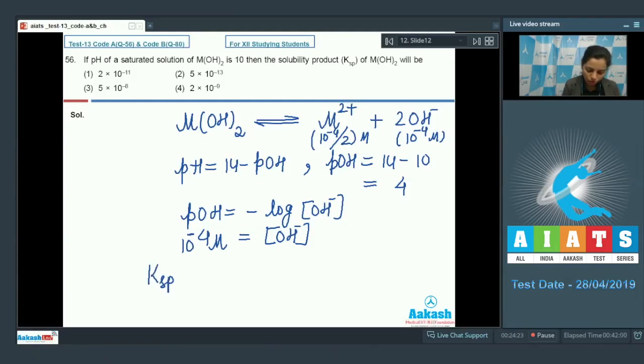Now, Ksp is the product of solubilities of the ions. So, in this way, this would become 10 raised to the power minus 4 divided by 2 into 10 raised to the power minus 4 whole square. So, this would become 10 raised to the power minus 8 plus minus 4. So, it is 10 raised to the power minus 12.